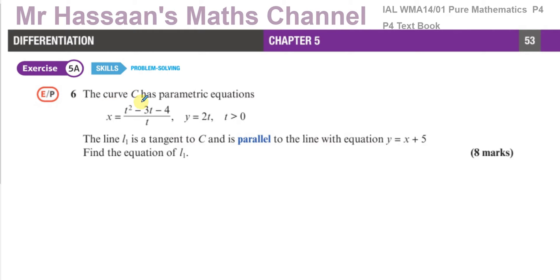The curve C has parametric equations: x equals t squared minus 3t minus 4 over t, and y equals 2t, where t is greater than 0. The line L1 is a tangent to C and is parallel to the line with the equation y equals x plus 5. Find the equation of line L1.